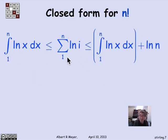What that tells us then is that the sum from 1 to n of log of i, which is what we're interested in, is bracketed between the integral from 1 to n of log x, and it's plus log of 1, but that's 0, and the integral from 1 to n of log of x plus the last term, which is log of n.